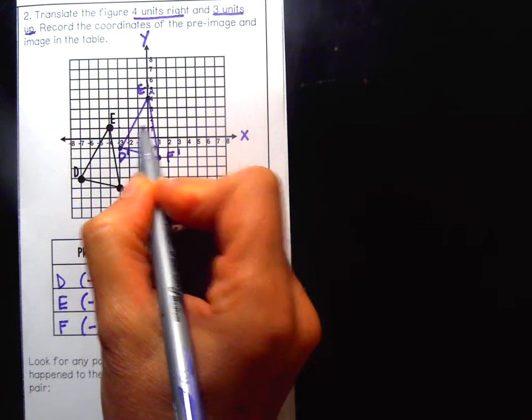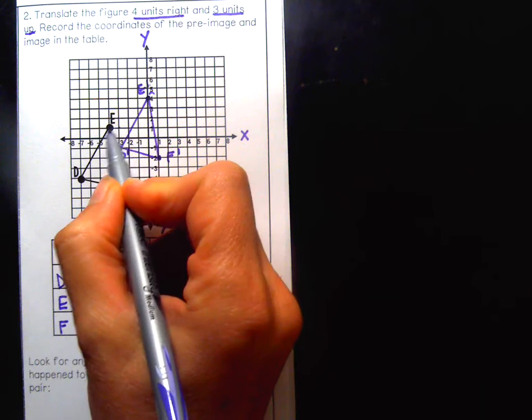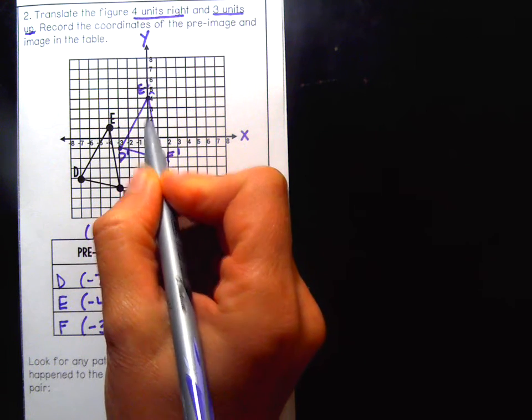One, two, three, four. Like if I go from E to E prime, one, two, three, four to the right. One, two, three up. All of my points should be four to the right and three up.